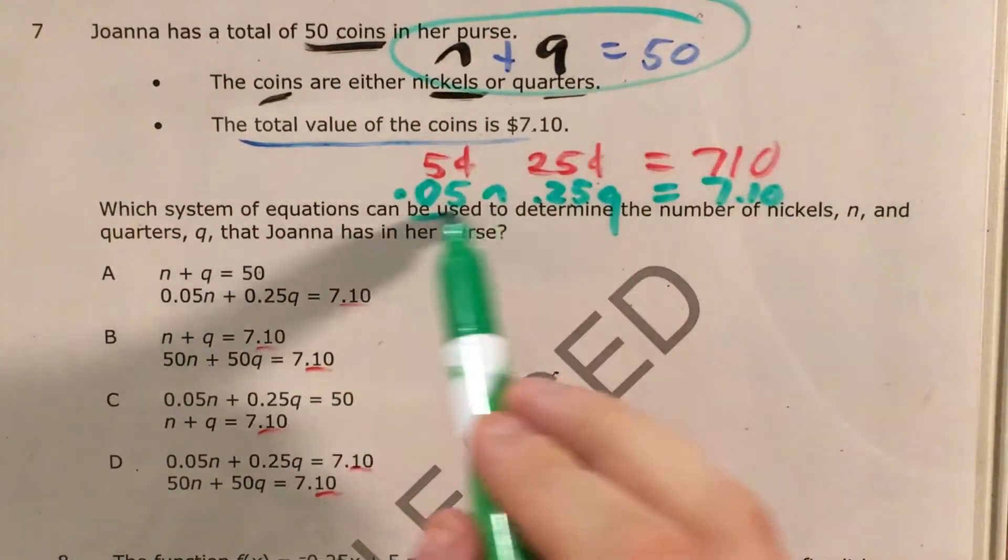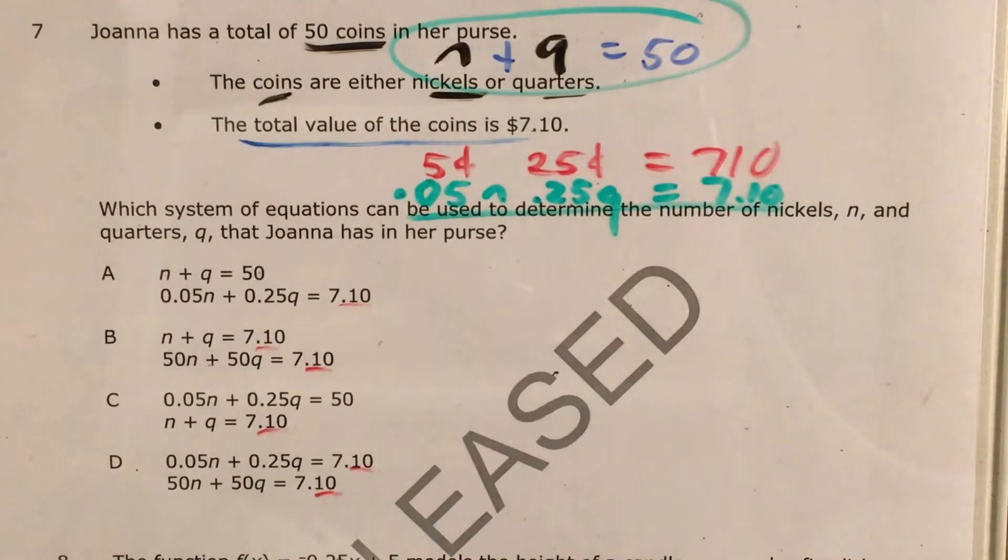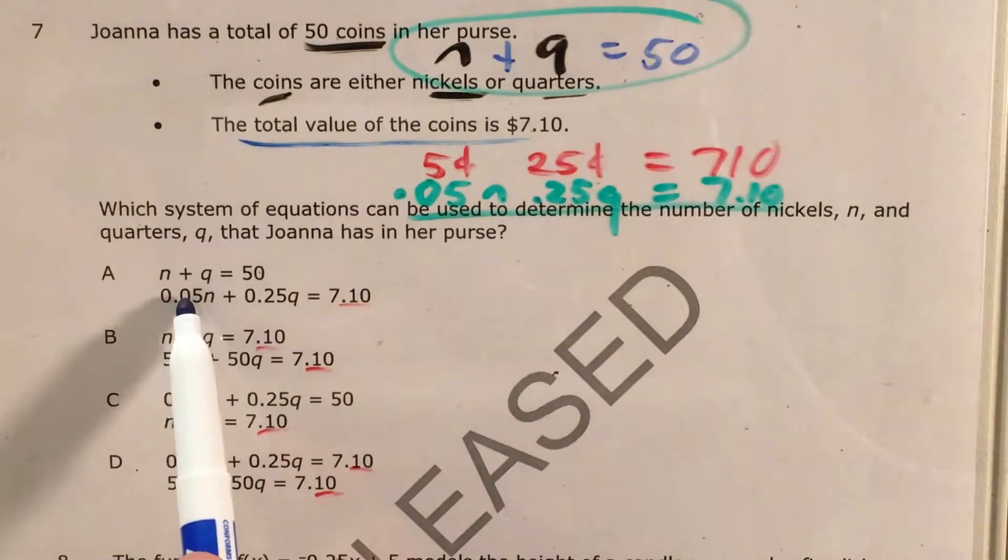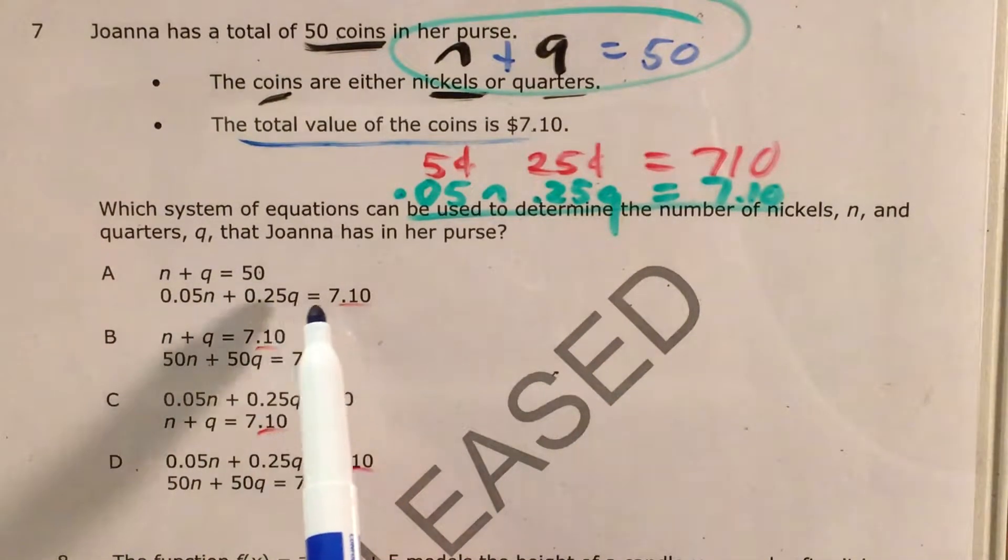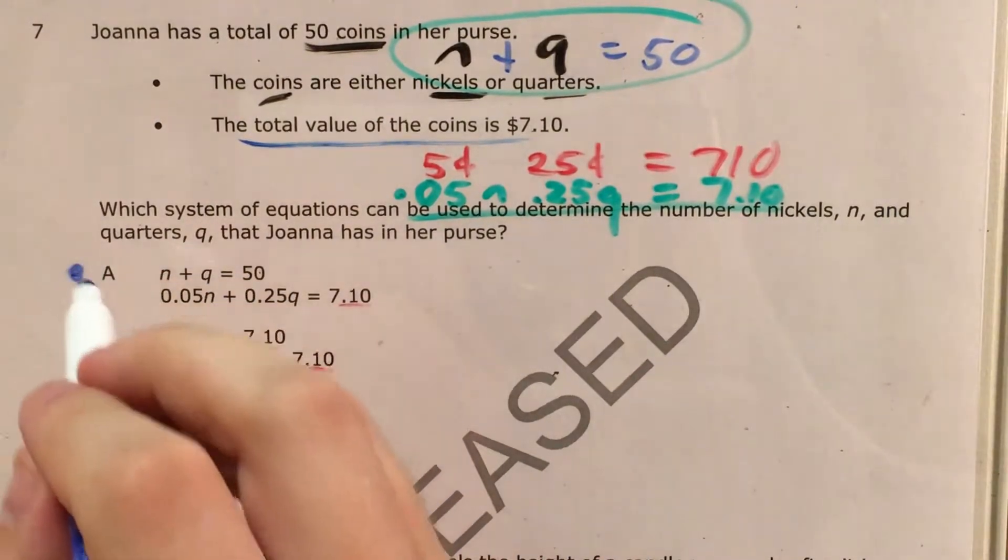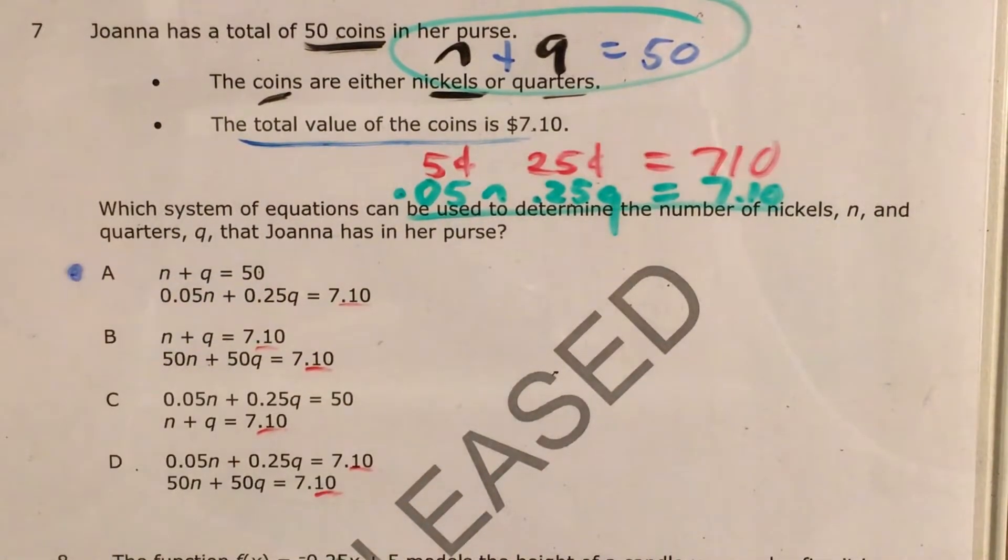So we have two equations that we can put into our system. So we just need to look now, after all the work we did translating this, at the answer choice that best matches what we've already come up with. So for choice A, I see N plus Q equals 50. I had that one. I see .05N plus .25Q equals 7.10. We had that one. So already this one looks promising, but let's knock out the others just to be sure.